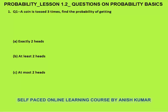The first question is: a coin is tossed three times. Find the probability of getting exactly two heads, at least two heads, and at most two heads. You know that probability is favorable outcomes divided by total possible outcomes.